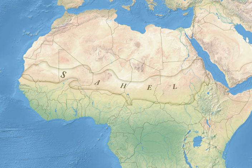The Sahel part of Africa includes parts of northern Senegal, southern Mauritania, central Mali, northern Burkina Faso, the extreme south of Algeria, Niger, the extreme north of Nigeria, central Chad, central and southern Sudan, the extreme north of South Sudan, Eritrea, Cameroon, Central African Republic, and the extreme north of Ethiopia.